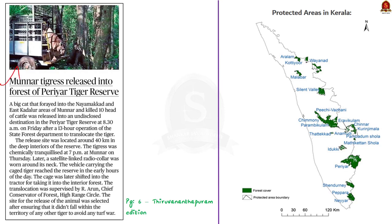This news article talks about a big cat that was released into an undisclosed destination in the Periyar Tiger Reserve. This big cat forayed into the Nayamakkad and East Kallur areas of Munnar and killed 10 head of cattle. So in this context let us learn some of the facts about the Periyar Tiger Reserve in a prelims perspective.